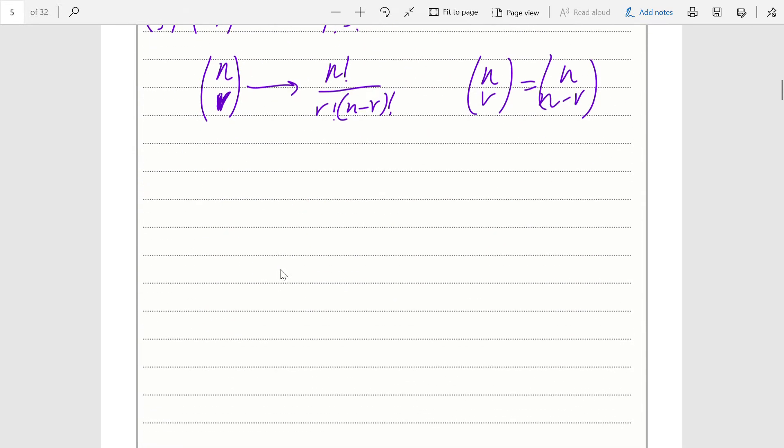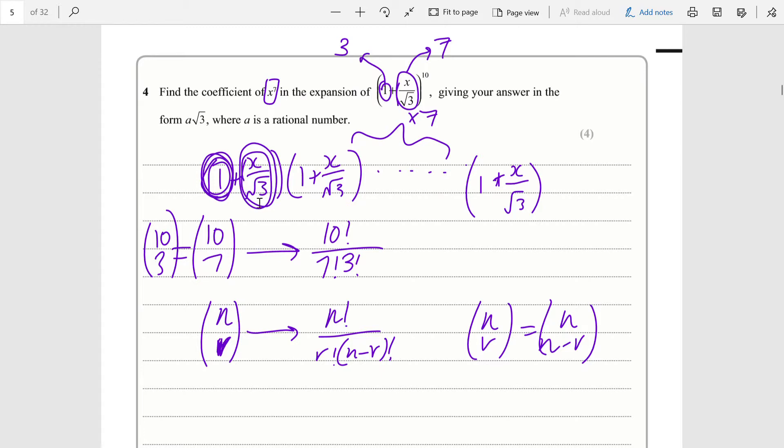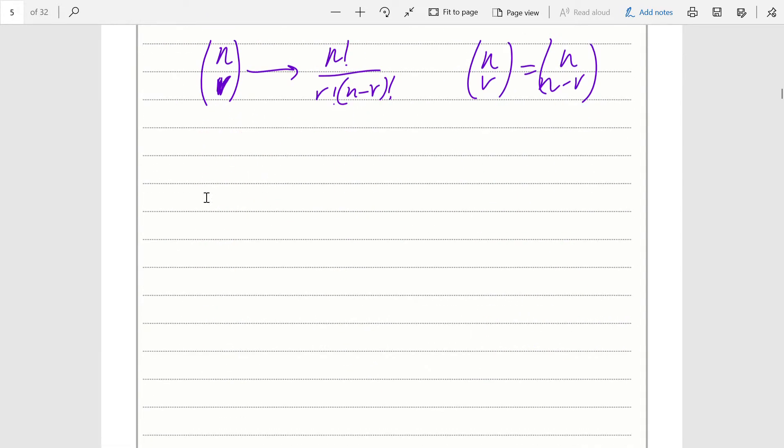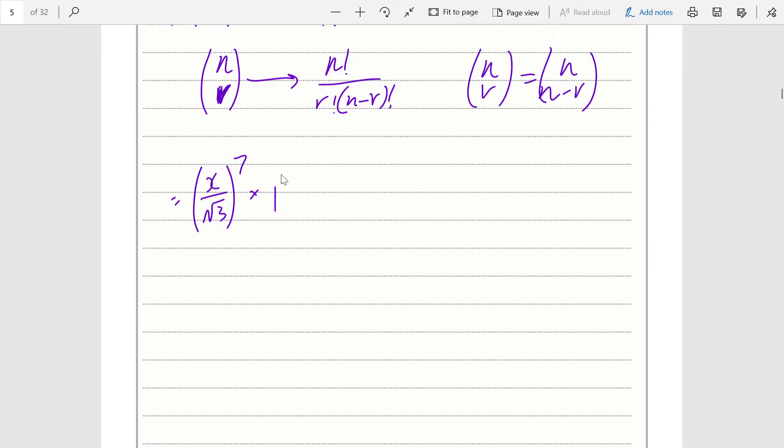Looking at the brackets where x over root 3 has been chosen 7 times to be multiplied, we have x over root 3 to the power of 7, multiplied by 1 to the power of 3. The number of ways you could choose x over root 3 seven times and 1 three times is 10 choose 7. If we're looking for the x to the power of 7 coefficient, we can move this x to the power of 7 outside.